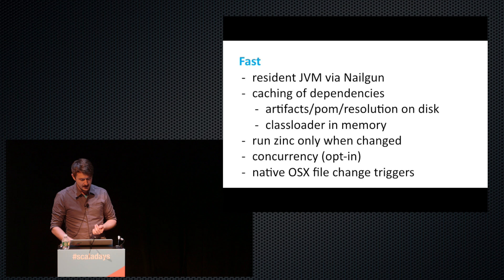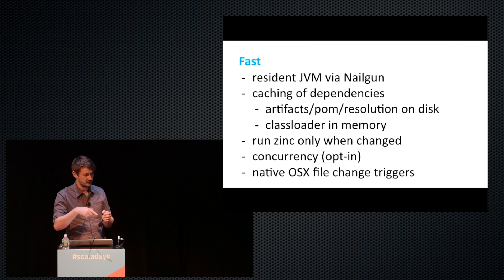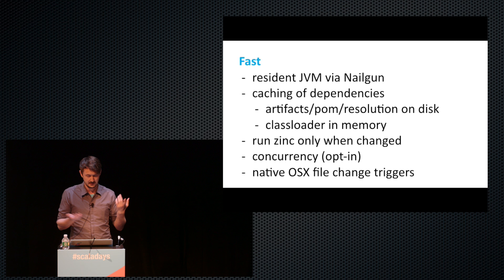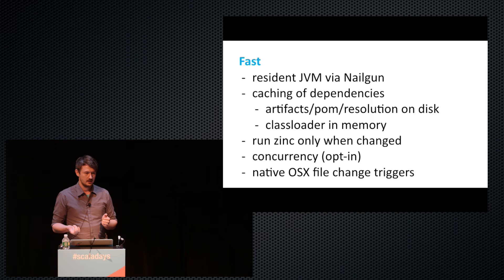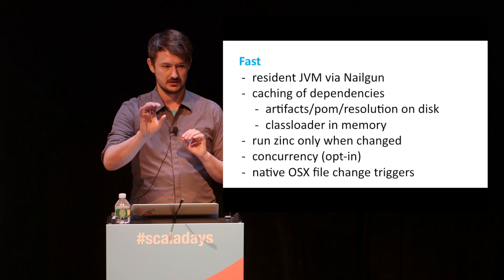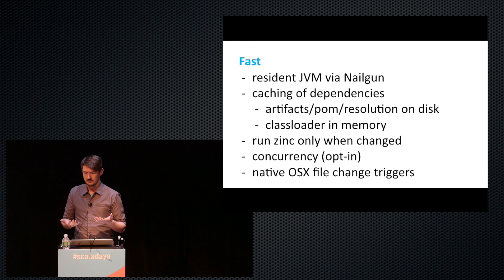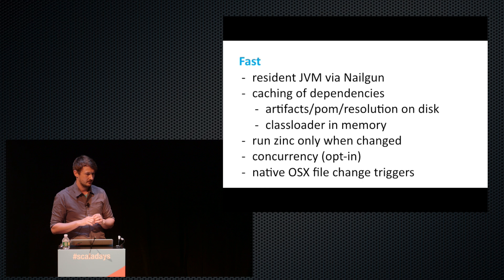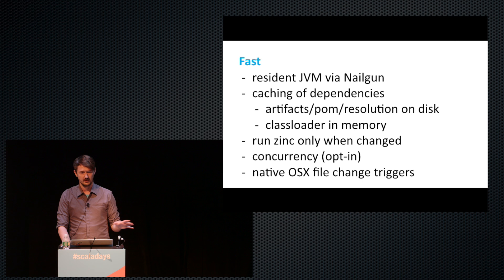The way CBT becomes fast is that it keeps a single JVM process running using a tool called Nailgun — a single server that keeps running, and when you call CBT from the command line, the client connects to it and quickly returns. Resolving is fast by caching artifacts — the jars on disk, the POM files on disk, and even the interpretation of those POM files — so computing the real dependencies is cached separately in a file, which makes it basically instant. For the jars you're using, it caches them in memory. It has a class loading graph that mirrors the graph of your dependencies, so whenever any dependency changes, it can invalidate only that sub-part of the graph. Each class loader is responsible for one dependency. CBT also supports concurrency for projects as well as tasks, but it's opt-in and not yet very well tested. Native file triggers watch everything.